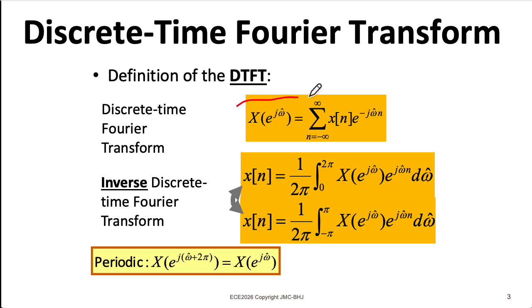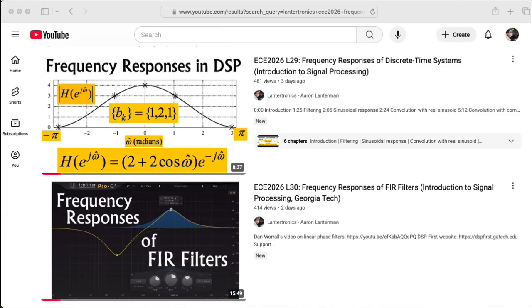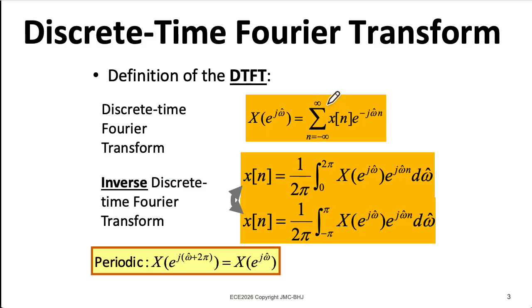You might notice this looks an awful lot like the formula we use to find the frequency response of a filter from its impulse response. Indeed, if I let x be little h and big X be big H, this is that formula. The discrete-time Fourier transform of an impulse response is the frequency response of that system, assuming big H exists. We'll talk about that in a second.